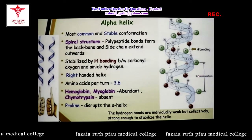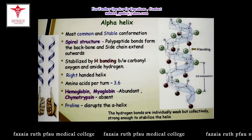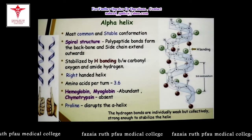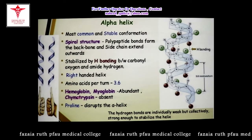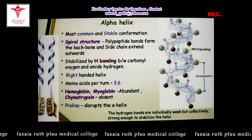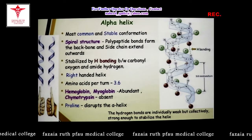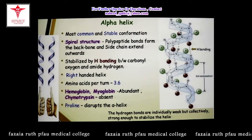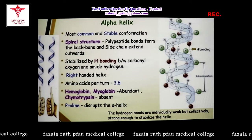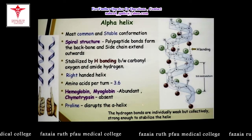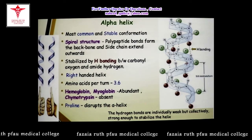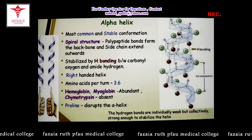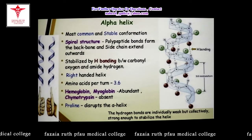Every turn, from one amino acid to the next, contains 3.6 amino acid residues. Among the 20 standard amino acids, proline is unique — it is an imino acid rather than a proper amino acid — and it is proline that disrupts alpha helix structures. This is a key characteristic of the alpha helix.